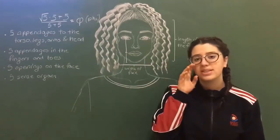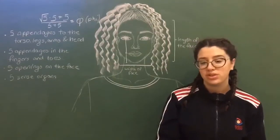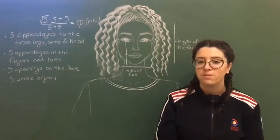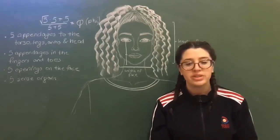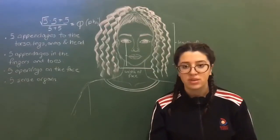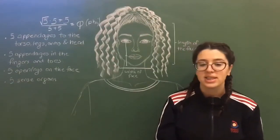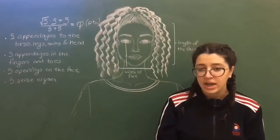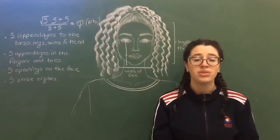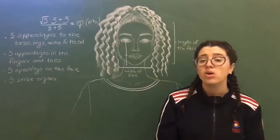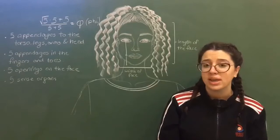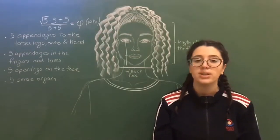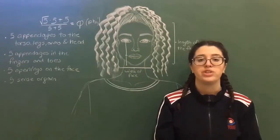Hello everyone! I decided to make a video about the golden ratio. If we think about the pyramids in Egypt, the snails, the sunflowers, the portrait of Mona Lisa, or even our fingernails, they all have something in common and that is the golden ratio. What is the golden ratio?